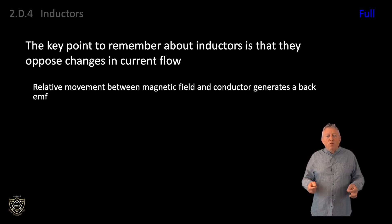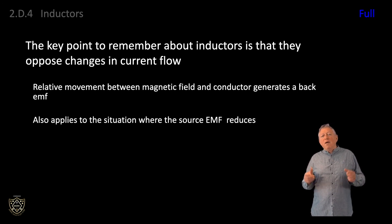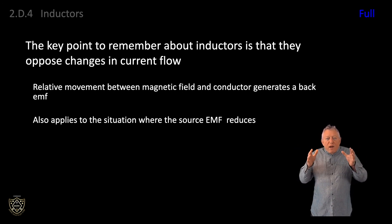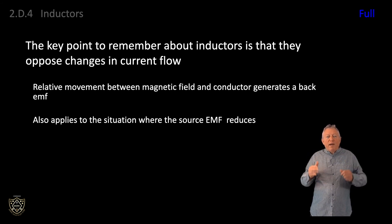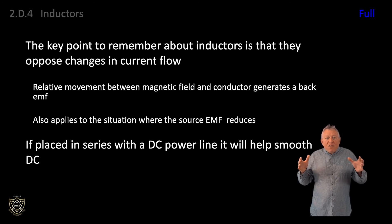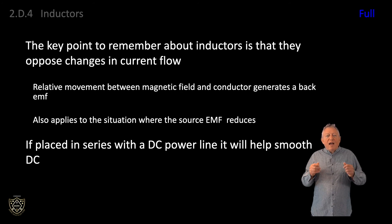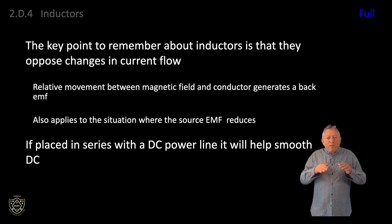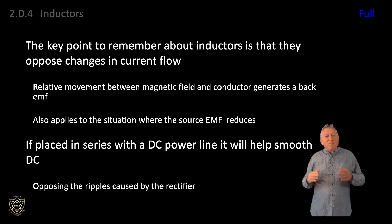The opposition to the change in current also applies to the situation where the source EMF reduces. This causes the magnetic field to slightly shrink and the consequent relative movement generates an EMF which tends to prop up or reinforce the current flowing — energy is returned from the magnetic field to the conductor. This property of an inductor has many uses; for example, if placed in series with a DC power line it will help to smooth DC by opposing the ripples or changes in current caused by the rectifier.